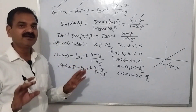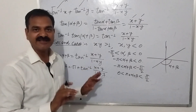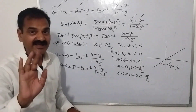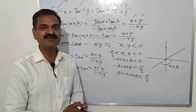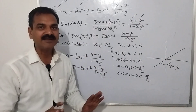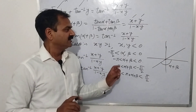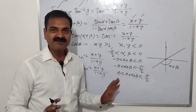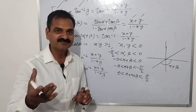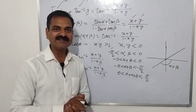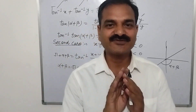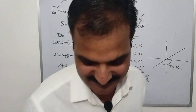In this manner we get the addition formula for inverse of tangent functions. There are 5 conditions in total, and we apply the formula accordingly in each of these 5 conditions. I think this is clear. We will meet in the next video. Until then, please like, share, and subscribe to my channel. Bye bye.